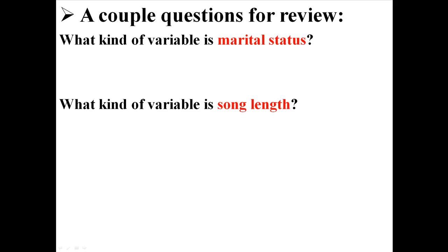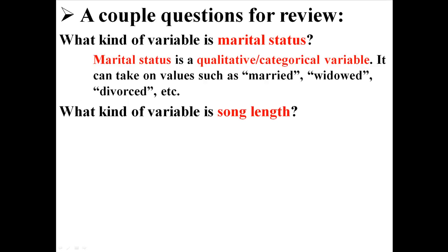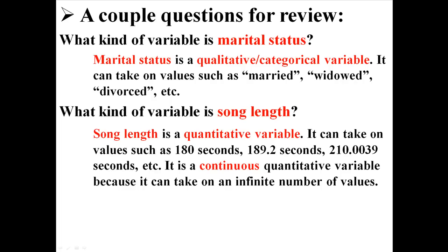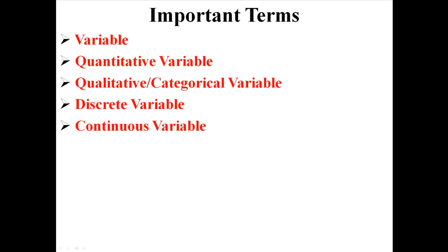Here are a couple of review questions. What kind of variable is marital status? You could get single, married, divorced, or widowed — that sounds categorical. So marital status is a qualitative or categorical variable. Now, what kind of variable is song length? Song length is a quantitative variable — it can take on values such as 180 seconds, 189.2, or 210.0039 seconds, which also makes it continuous because it can take on an infinite number of values.